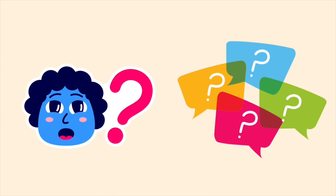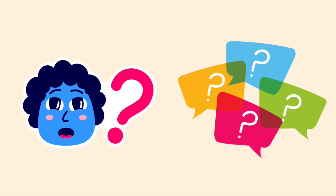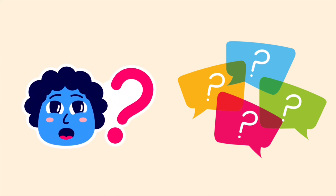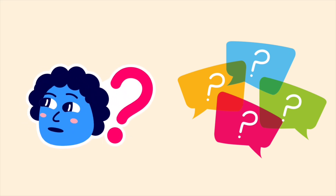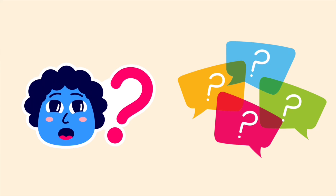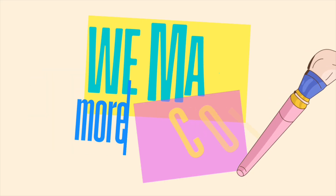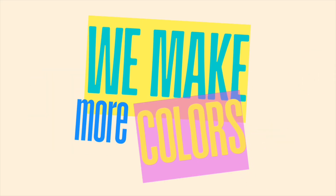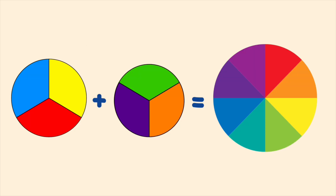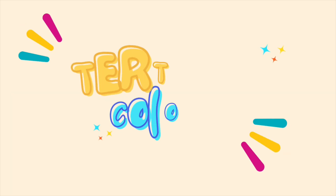What will happen if you mix primary colors with secondary colors? We make more colors. Primary colors and secondary colors mixed together are called tertiary colors.